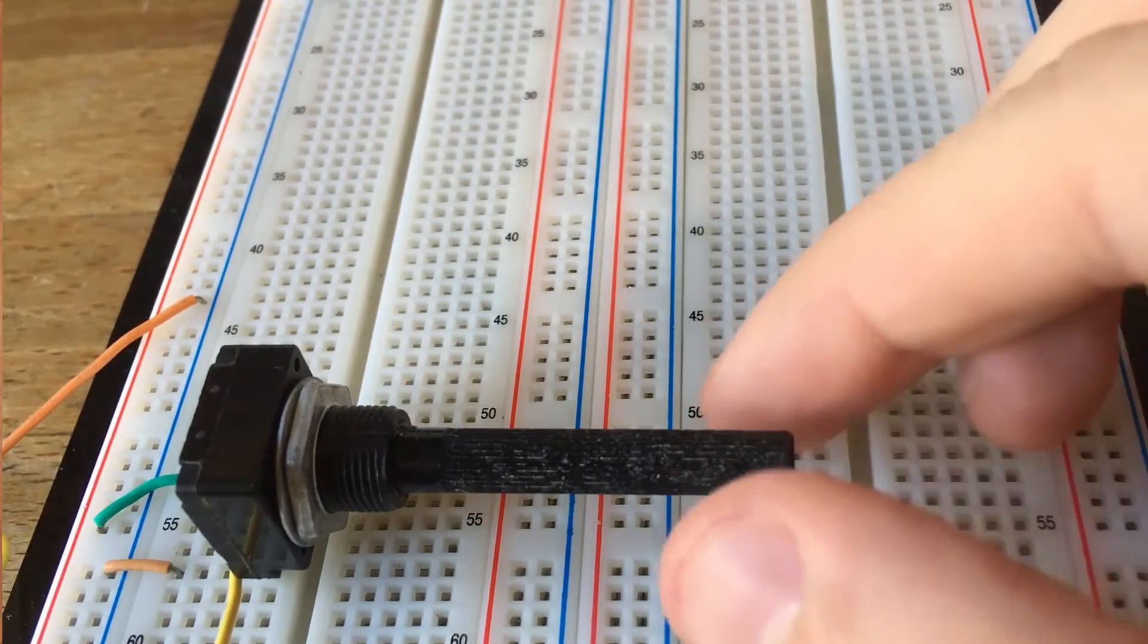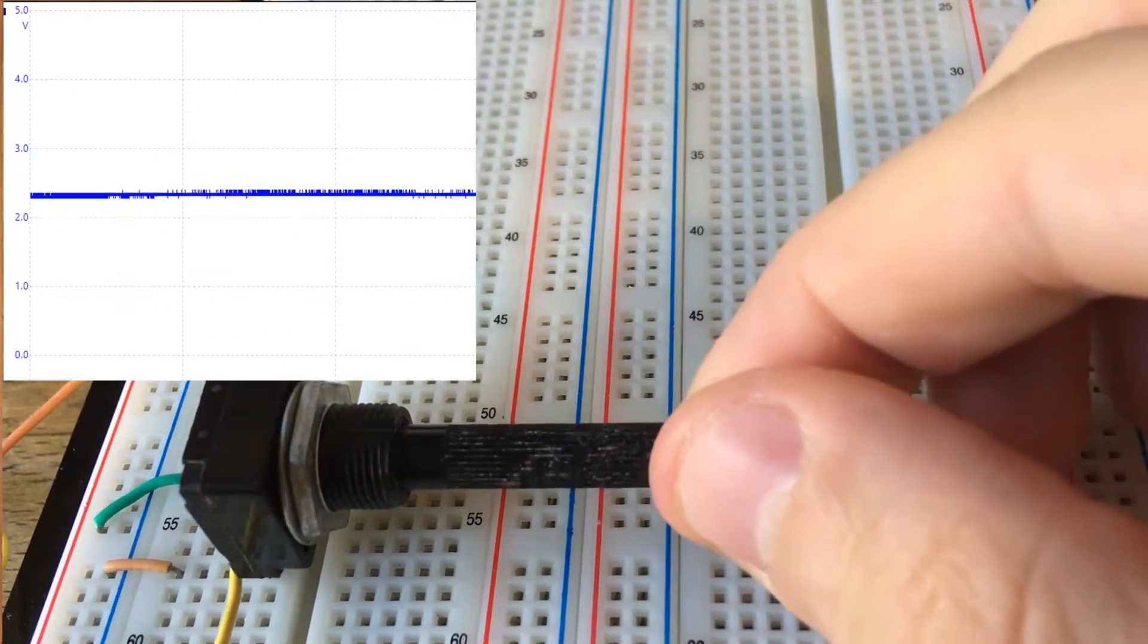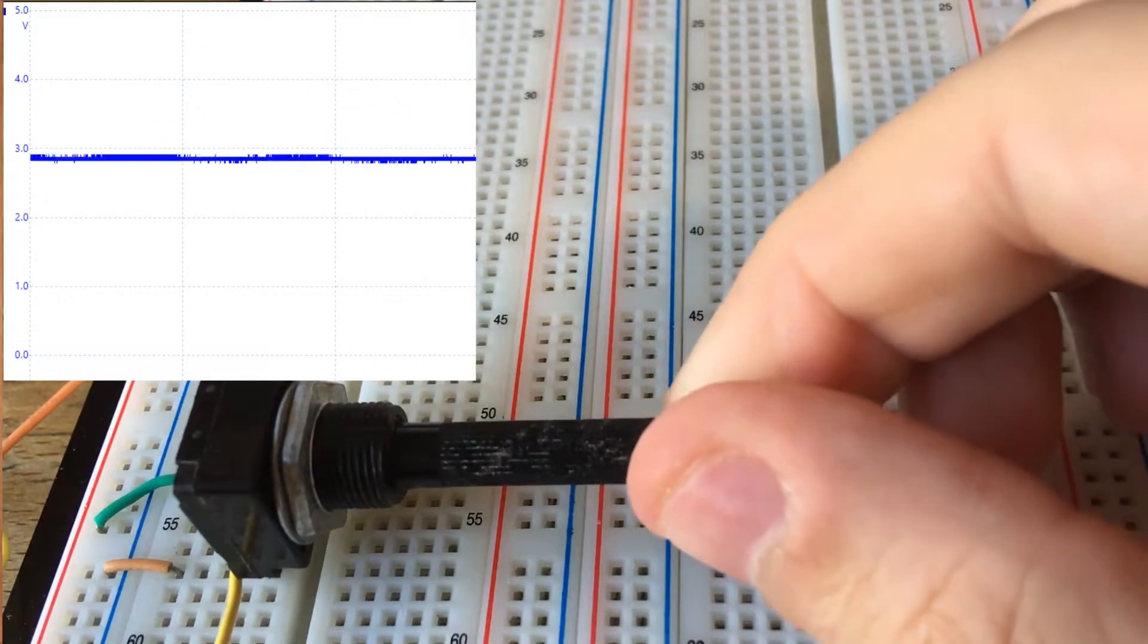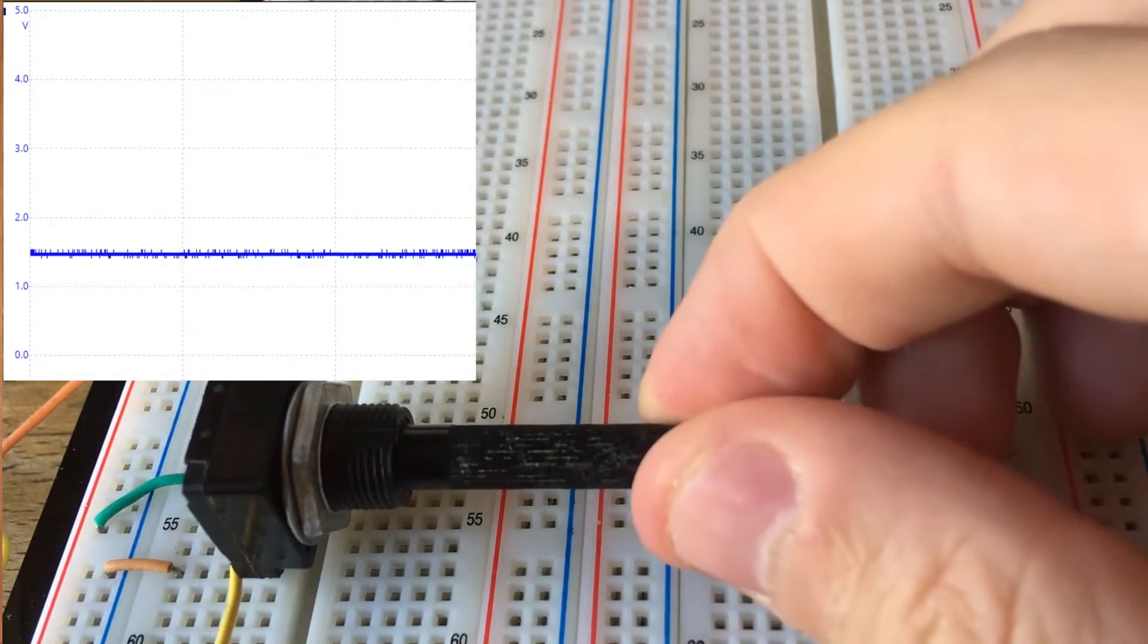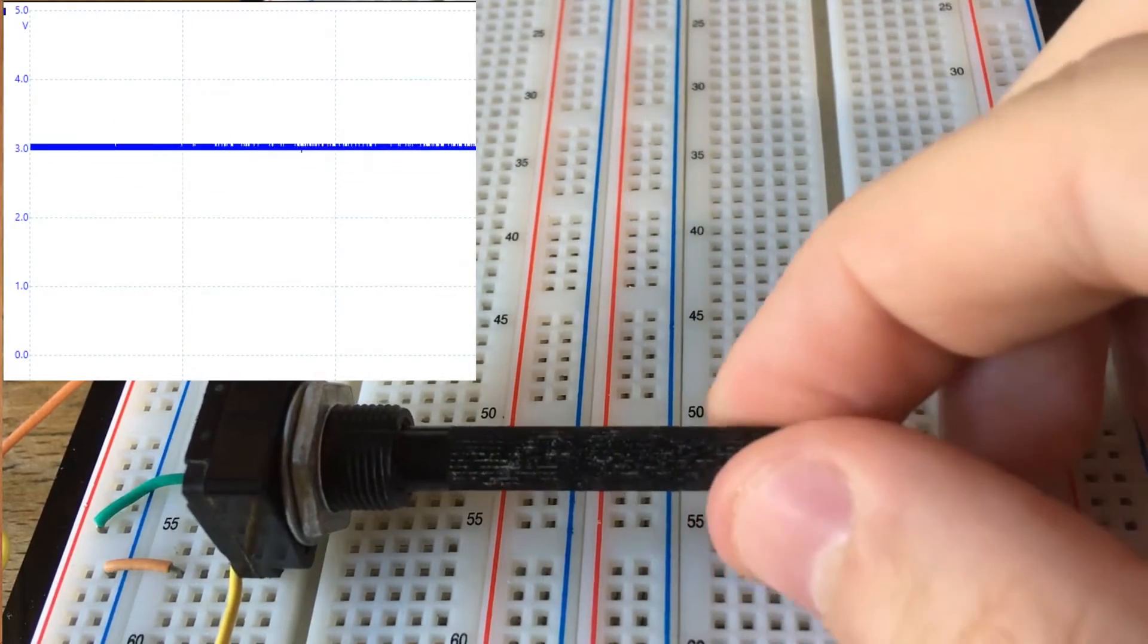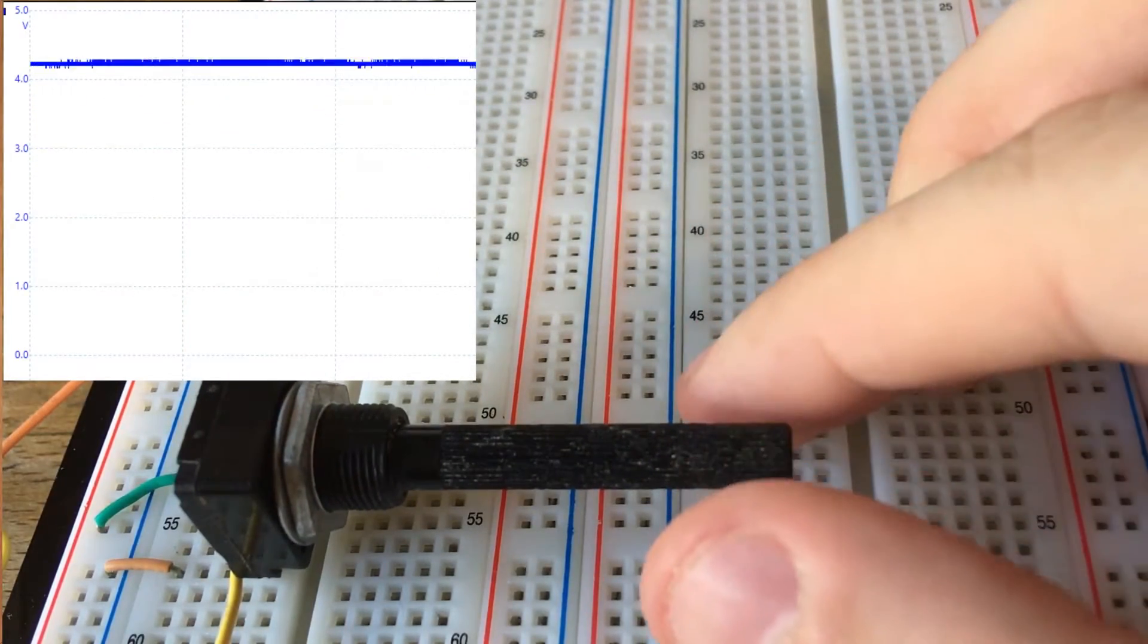You can control the output voltage of the potentiometer by changing the knob position. As you can see this is not a logic signal with a high or low value, but an analog signal that in this case can vary from 0 up to almost 5 volts.